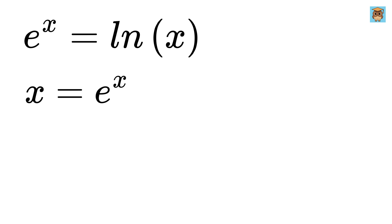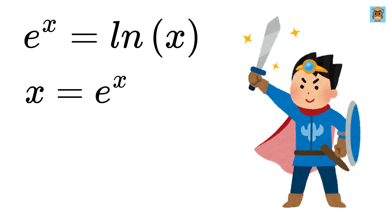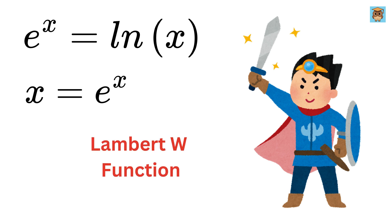Now, what's next? Let us plot x on the same graph. You can again see that these two graphs never meet each other, which we have already seen. So what to do now? Our savior for this problem will be a function called the Lambert W function.